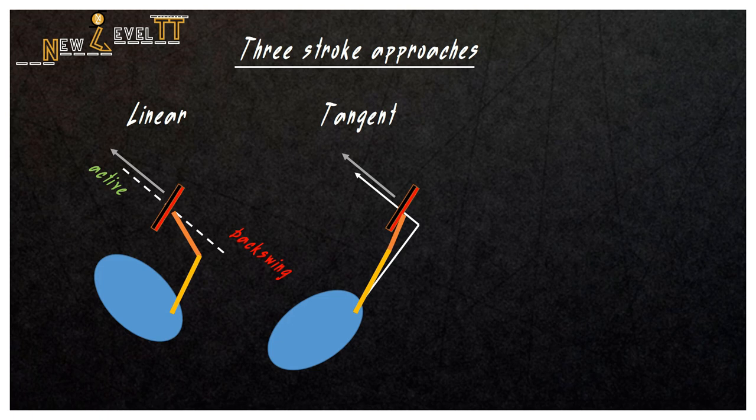So we have backswing, locking and active phase. Remember it. Players usually compensate with pause before the stroke when the ball is rising. It is better to lock the dynamics of the ball with the forearm movement and your legs bounce like the ball.